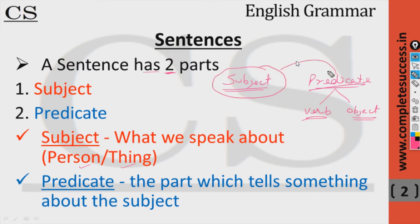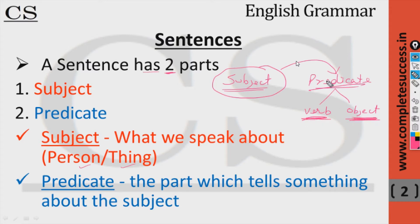Everything except the subject comes under the predicate. So subject is what we speak about, and when we talk about predicate, we focus on two things: one is verb and the second is object.